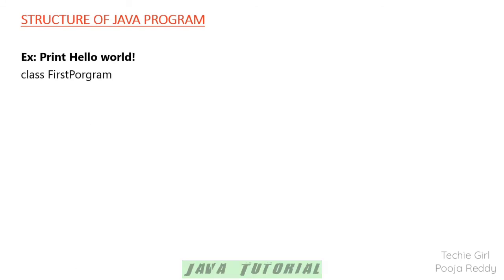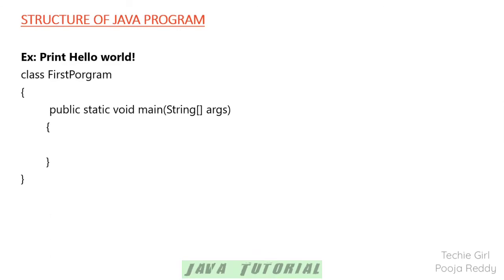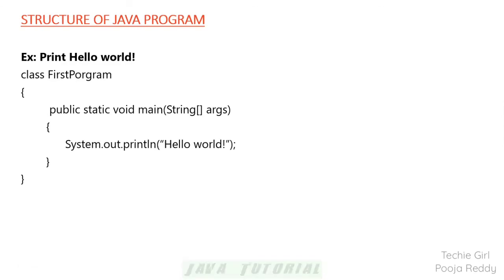Now let's quickly see an example — the Hello World program. We need to print Hello World on the output screen. As mentioned, we start with the class keyword followed by the class name, here 'FirstProgram', enclosed with flower braces. We include the main method with its scope, and then System.out.println — whatever is written in double quotes is printed on the output screen, giving us 'Hello World' as output.